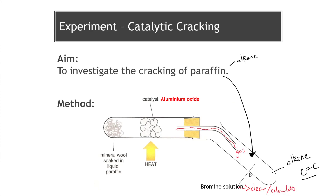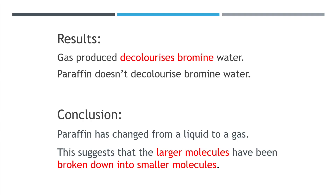Therefore, the gas we've produced is not only smaller than the paraffin, but it must contain a carbon to carbon double bond and must be an alkene. The results from this experiment are: the gas produced from the cracking reaction would decolourise the bromine water, telling us the gas must be an alkene. It's also a gas compared to the liquid paraffin we started with, suggesting we've made a smaller molecule. So we know that cracking a large chained alkane produces smaller, more useful molecules, and at least one of those molecules will be an alkene.